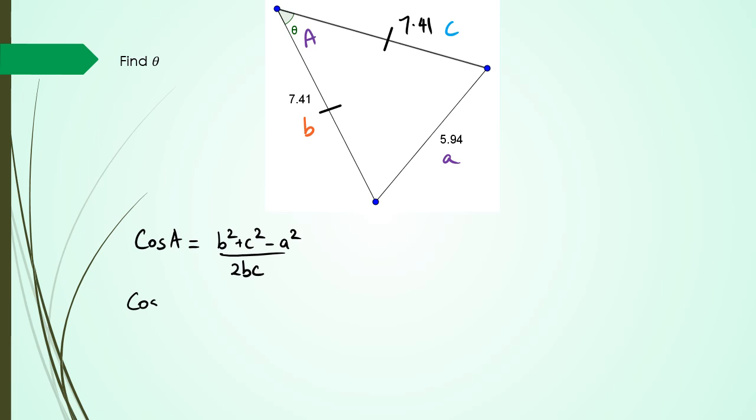So cos A = (7.41² + 7.41² - 5.94²) / (2 × 7.41 × 7.41).